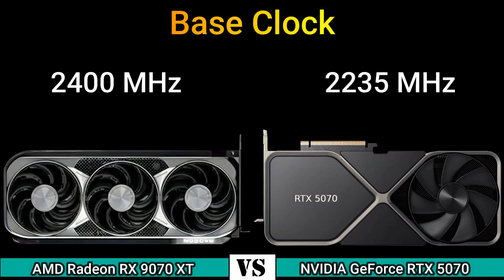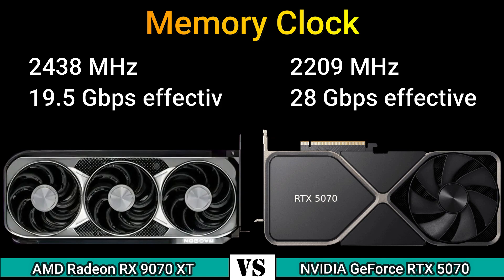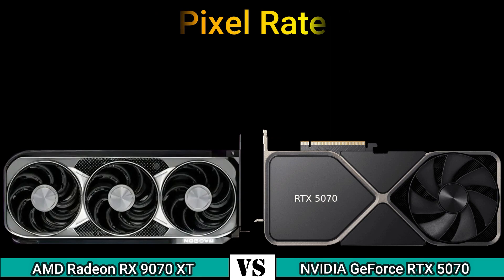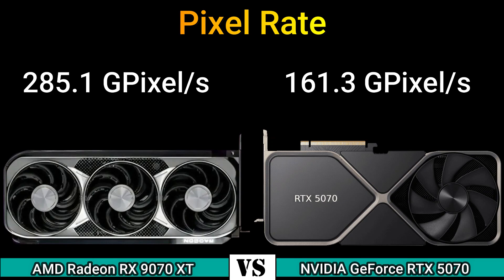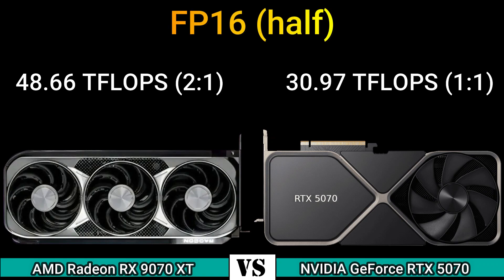Base clock: 2400 MHz and 2235 MHz. Boost clock: 2970 MHz and 2520 MHz. Memory clock: 2438 MHz (19.5 Gb/s effective) and 2209 MHz (28 Gb/s effective). Pixel rate: 285.1 Gpixel/s and 161.3 Gpixel/s. Texture rate: 760.3 Gtexel/s and 483.8 Gtexel/s.